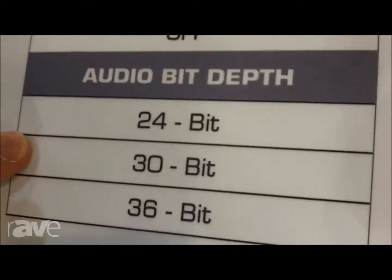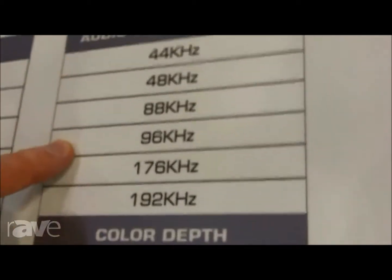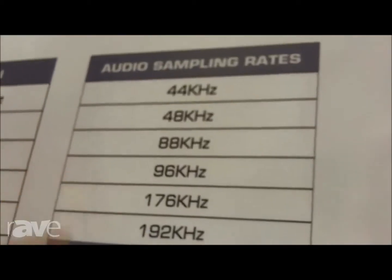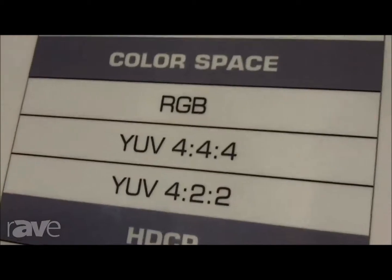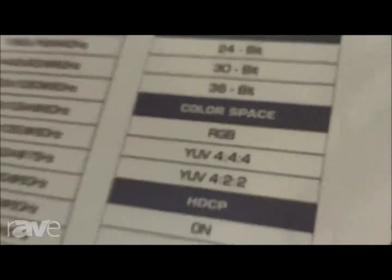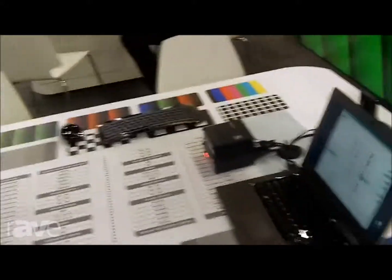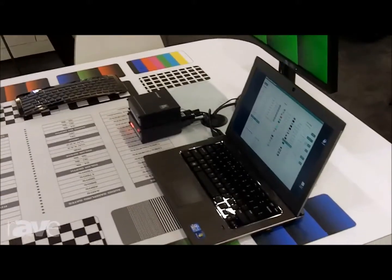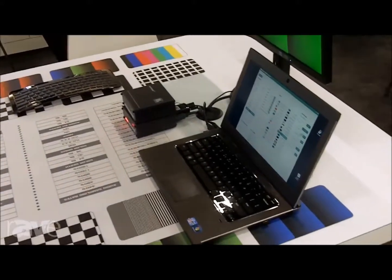You can also change your audio bit depth. You can also change your audio sampling rate. And you can choose your color space. So all of these variables that go into figuring out how to troubleshoot a digital system, the 840 HXL gives you at an extremely attractive price point.